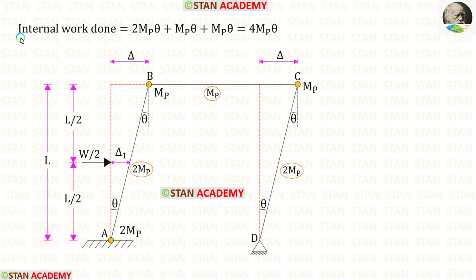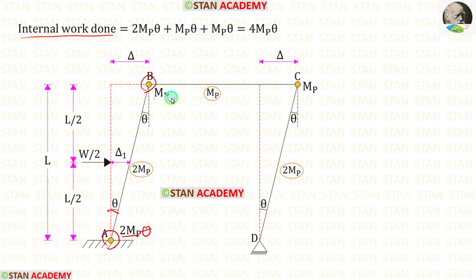Let us find the internal work done. At point A we have a plastic hinge; we multiply 2MP by angle θ. At joint B we have a plastic hinge; we multiply MP by angle θ. At joint C we have a plastic hinge; we multiply MP by angle θ.